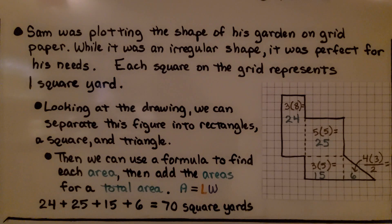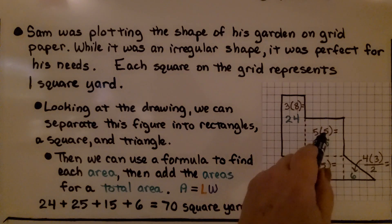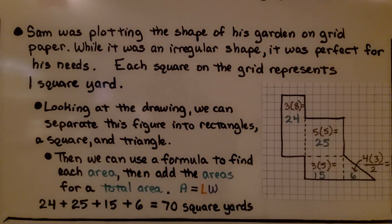Sam was plotting the shape of his garden on grid paper. While it was an irregular shape, it was perfect for his needs. Each square on the grid represents one square yard. And looking at the drawing, we can separate this figure into rectangles, a square, and a triangle. Then we can use a formula to find each area, then add the areas for a total area. We can use area equals length times width for the rectangles or even the square. We would need to use a triangle formula for the triangular piece. We add up all the areas to get a total area.